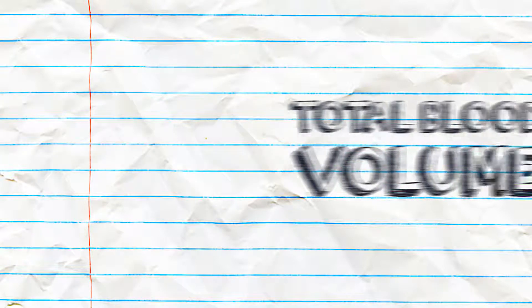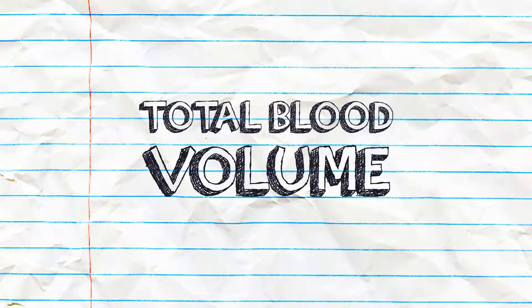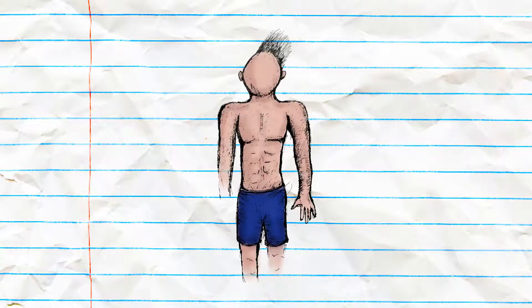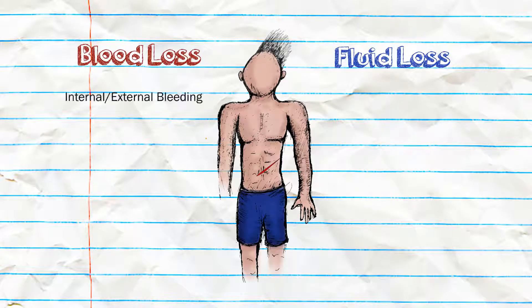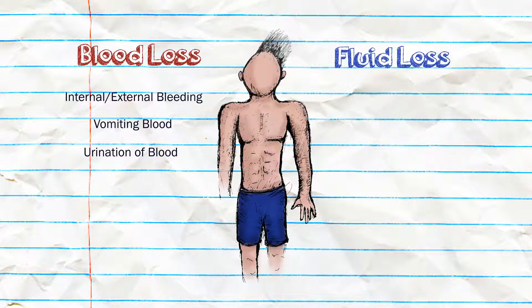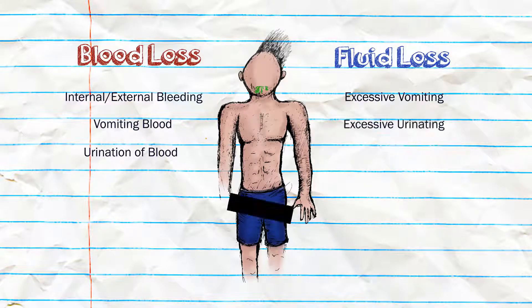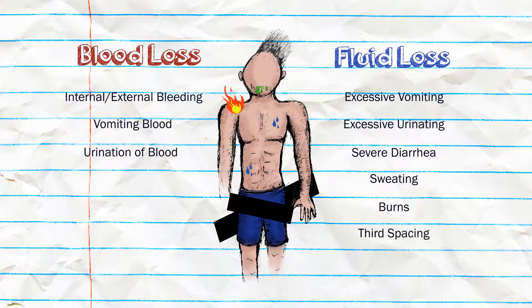Several factors affect the blood return to the heart, including the total blood volume. Decreases in blood volume can be split into two categories: blood loss and fluid loss. Blood loss can result from internal or external bleeding, vomiting blood, or urination of blood. Fluid loss is similar, but involves the loss of other bodily fluids, such as excessive vomiting, excessive urinating, severe amounts of diarrhea, sweating, burns, and third spacing.